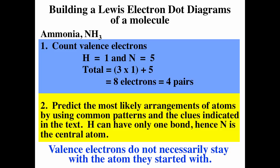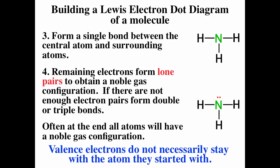Step two is to predict the most likely arrangement of atoms, and sometimes you need a little chemical intuition. For ammonia, hydrogen can only have a single bond, so nitrogen is probably going to be in the center surrounded by three hydrogens. Step three is to assume single bonds, which uses six of our eight valence electrons, leaving two remaining. Step four is to add those lone pairs where needed to get noble gas configuration. This gives us the final Lewis diagram for ammonia, using all eight valence electrons.